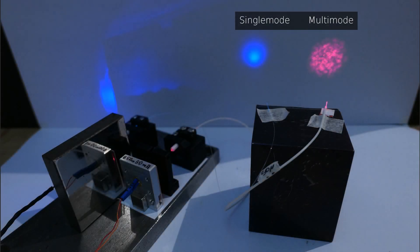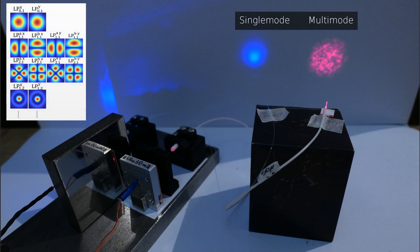On the top right, you see the beam profiles exiting the fibers. The single-mode fiber in blue produces a nice Gaussian beam, while the multi-mode fiber produces a spotty red pattern. The spots are a combination of many different fiber modes interfering on the screen.